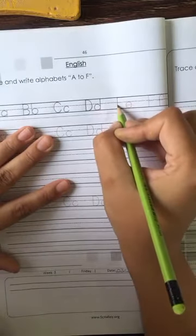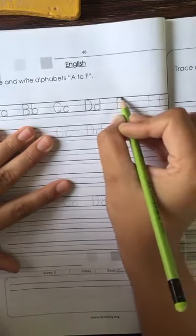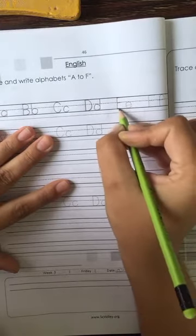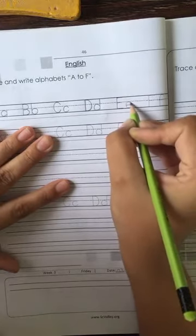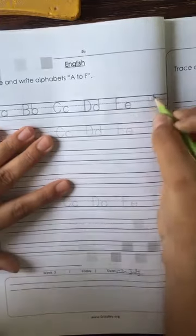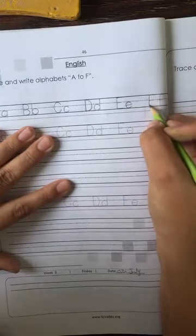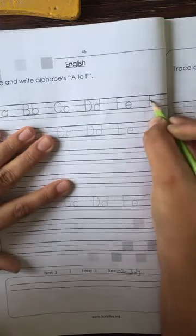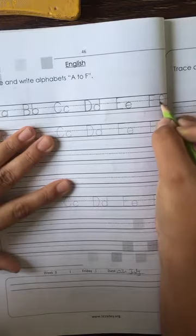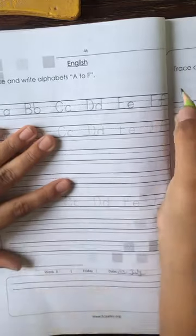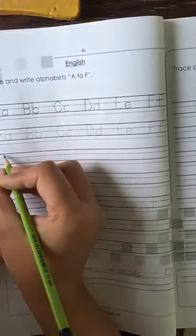Now fifth letter is E. Now F. A, B, C, D, E, F. Now self-writing.